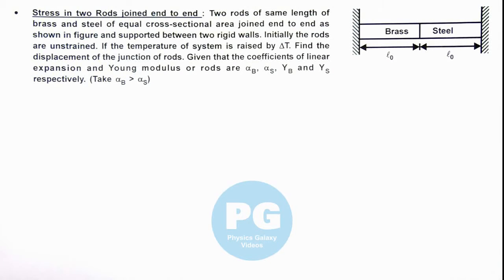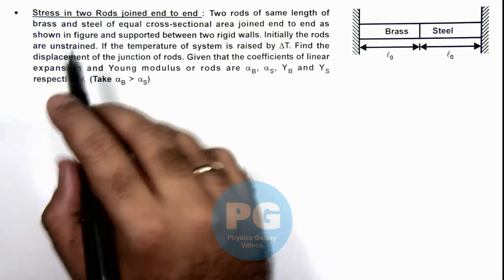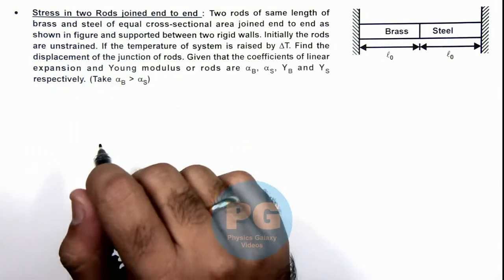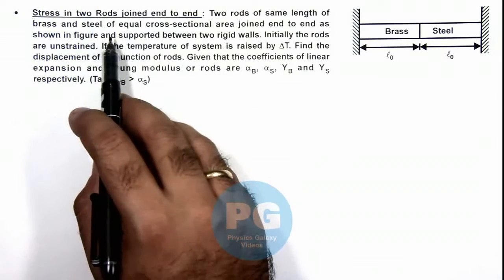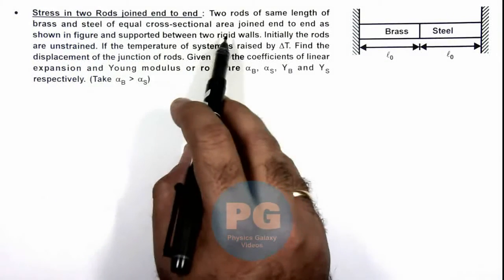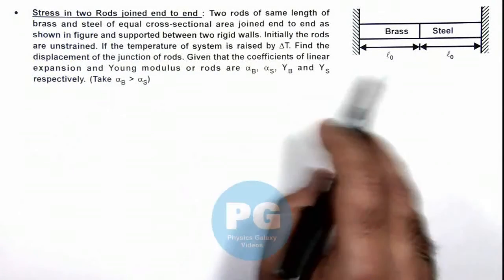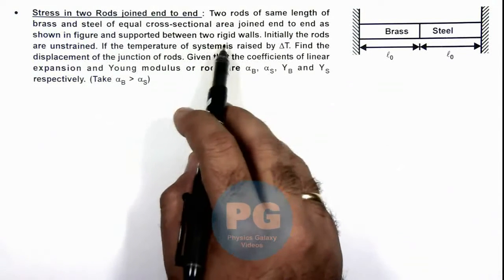In this illustration, we'll discuss stress in two rods joined end to end. We are given two rods of same length of brass and steel of equal cross-sectional area joined end to end as shown in figure and supported between two rigid walls.